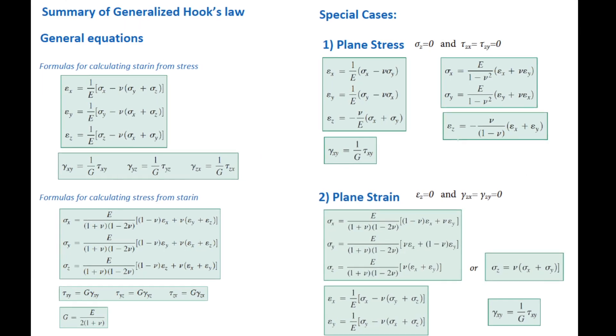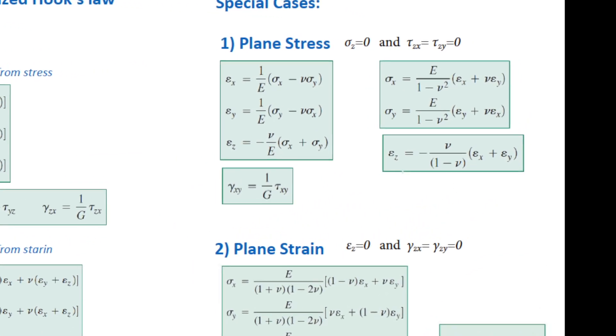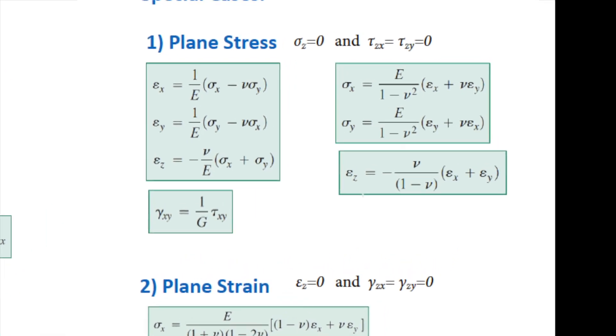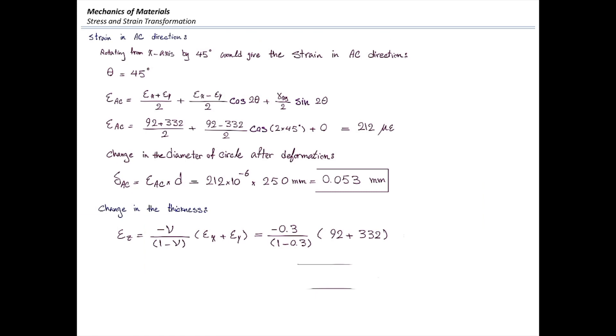In the plane stress problem, we do have strain in the z direction. And this equation gives us the magnitude of strain in that direction. Plug in the values and then we can determine how much is the strain, which is 182 negative. Negative means that the element is going to get shorter. Multiply that by the initial thickness. That would give us the change in the thickness.